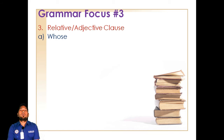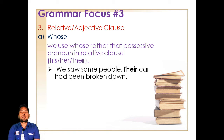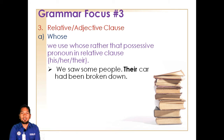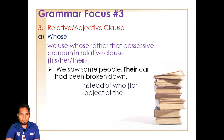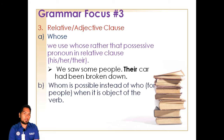Adjective clause or relative clause — the first one is 'whose'. We use 'whose' as a possessive pronoun in a relative clause, replacing 'his' or 'their'. For example: 'We saw some people' and 'Their car had broken down'. Their car refers back to 'people'. So we combine it: 'We saw people whose car had broken down.'